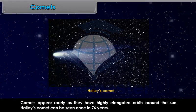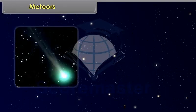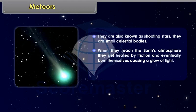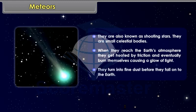Meteors. They are also known as shooting stars. They are small celestial bodies. When they reach the Earth's atmosphere, they get heated by friction and eventually burn themselves, causing a glow of light. They turn into fine dust before they fall onto the Earth.